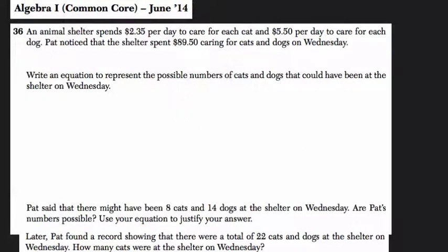Okay, so what does that tell us? That tells us that here we have a unit rate for cats, $2.35 per cat and $5.50 for dogs. And in total, they spent $89.50.